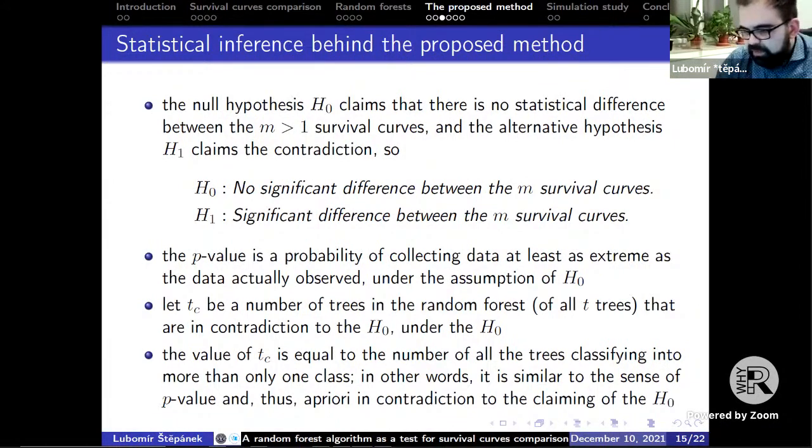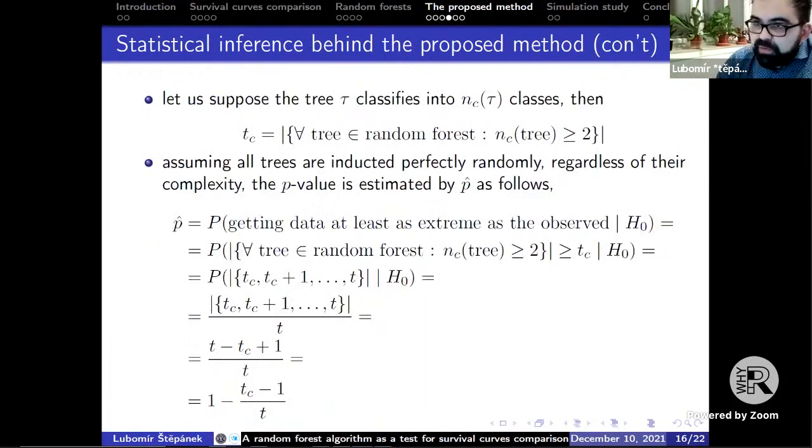P-value is the probability of collecting data at least as extreme as the data actually observed under the assumption of the null hypothesis. Let Tc be the number of trees in the random forest that are in contradiction to the hypothesis. Under the null hypothesis assumption, it means that the value of Tc is equal to the number of all trees classifying into more than only one class. In other words, it is similar to the sense of p-value and thus a priori in contradiction to the claiming of the null hypothesis. Now let's suppose that the tree τ classifies into nc(τ) classes. Then Tc is the size of the set of all trees classifying into at least two classes. Assuming that all trees are inducted perfectly randomly and independently regardless of their complexity, the p-value is estimated as a probability of getting data at least as extreme as observed.